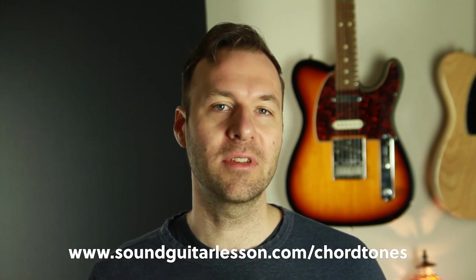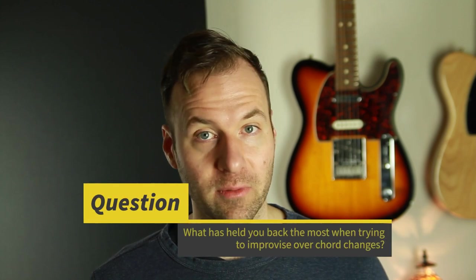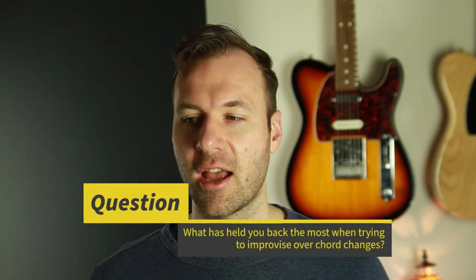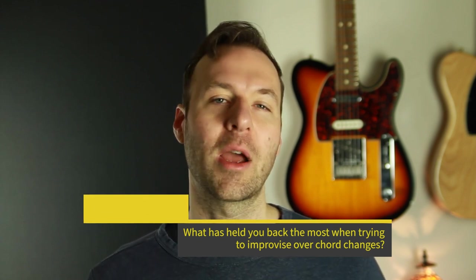Don't forget to download my melodic arpeggio chord tone vocabulary pack for all the diagrams of 12 different chord types including the minor triad from this lesson. Just use the link in the top of the description or go to soundguitarlessons.com/chordtones. Let me know in the comments what you struggle with when trying to improvise over chord changes. Very often it's targeting the changes, knowing where we are, that's why we're doing this series and working on the vocabulary.